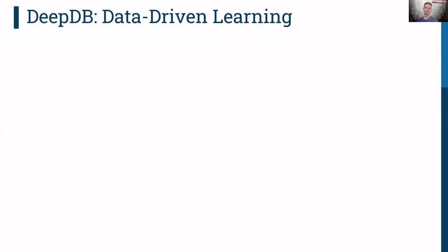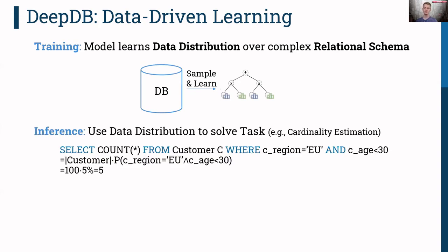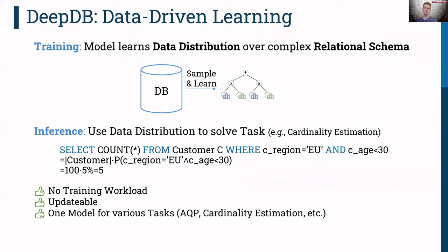That is why we suggest data-driven learning with DeepDB. The idea is that the model learns the complex data distribution of a relational schema, and then at runtime we use this to solve the task at hand. For cardinality estimation, if we want to know how many customers are from the EU and younger than 30, we compute the corresponding probability, multiply it by the number of customers, and end up with the correct result. The advantage is that we do not have to run a training workload since the model learns directly from the data.